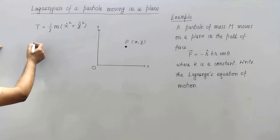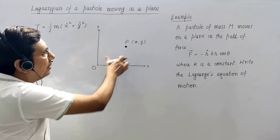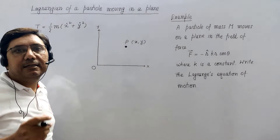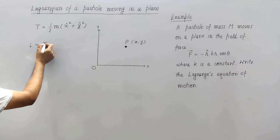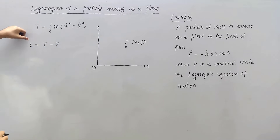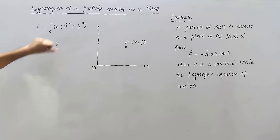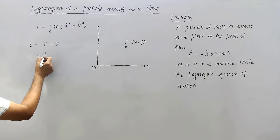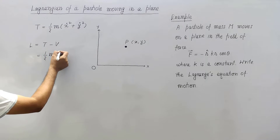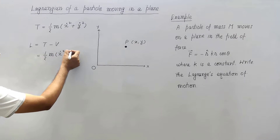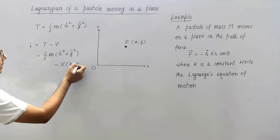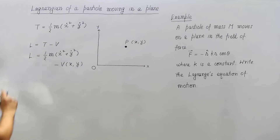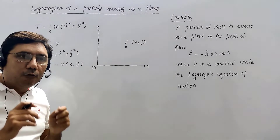If the potential is given as a function of x and y, V(x,y), then the Lagrangian in Cartesian coordinates will be T minus V. So the Lagrangian equals kinetic energy minus potential energy: L = 1/2 m (x-dot squared plus y-dot squared) minus V(x,y). In this way you can write down the Lagrangian for a particle moving in a plane in Cartesian coordinates.